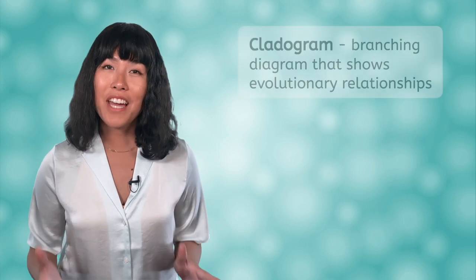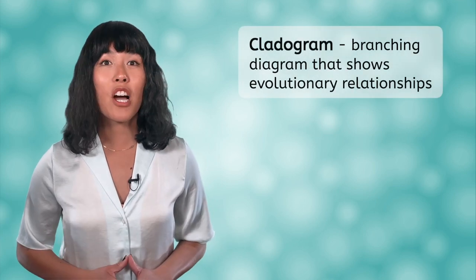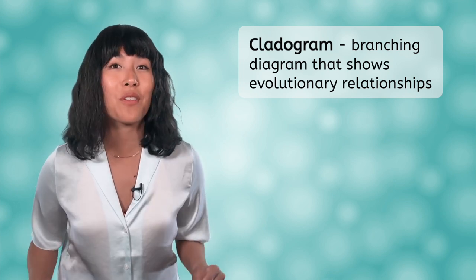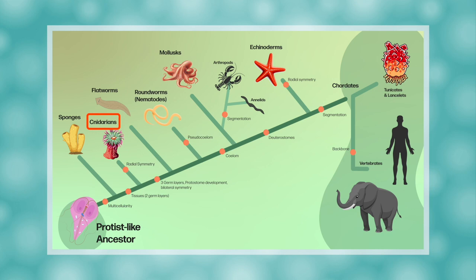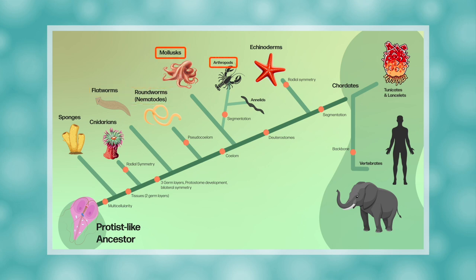A good way to see evolutionary relationships among taxonomic classifications is to look at a cladogram — a branching diagram that indicates which species evolved from what, and shows defining characteristics that set classes apart. In this cladogram, we can trace the evolution of various animal phyla. Starting from the left, we have a protist-like single-celled ancestor. From there, multicellular animals such as sponges evolved. As species adapted to grow more unique layers of tissue, cnidarians appeared. Flatworms and roundworms show further diversification, and the coelom was the defining characteristic that led to molluscs and arthropods. Echinoderms developed radial symmetry, and chordates appeared near the end, indicating they were the most recent to evolve.